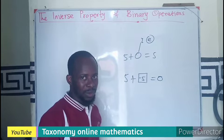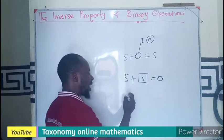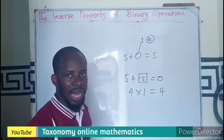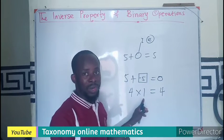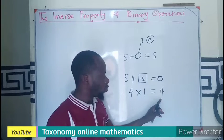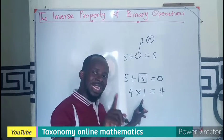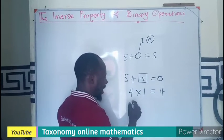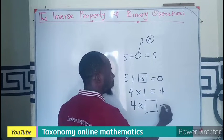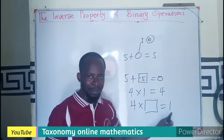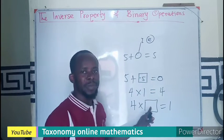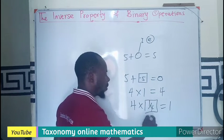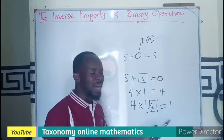In multiplication, four times one will always give us four — any number multiplied by one gives back the same number. So one is also an identity element for multiplication. Now if I want to get one back — four times some value giving one — I need to find the inverse: reciprocate four to get one over four, and one over four times four gives us one.